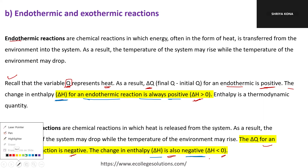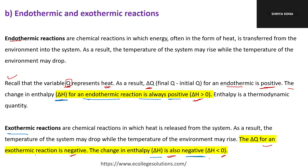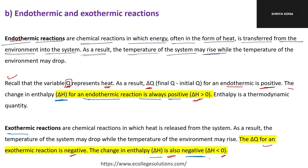Understanding chemistry in relation to biochemistry makes it easier for the MCAT. Endothermic reactions are chemical reactions in which energy, often in the form of heat, is transferred into the system from the environment. As a result, the temperature of the system may rise while the temperature of the environment may drop. For an endothermic reaction, delta Q is positive.